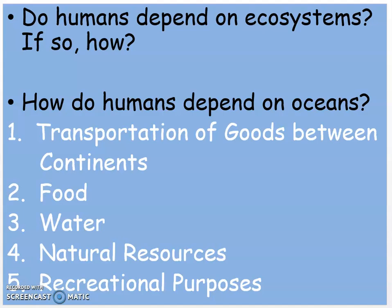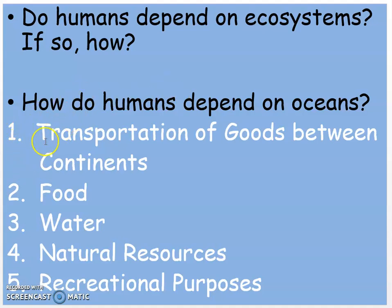Do humans depend on ecosystems? If so, how? Yes, humans depend on many different types of ecosystems. So how do humans depend on oceans? There are five ways. The first way is transportation of goods between continents.